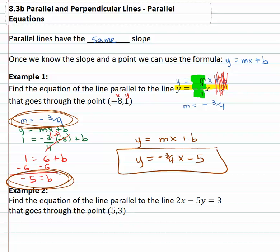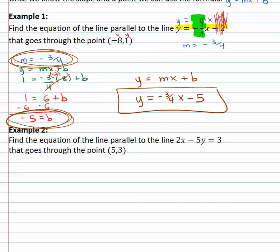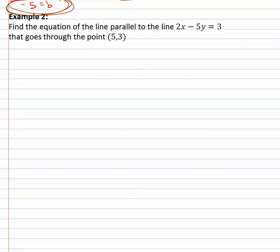Let's try another example where we do essentially the same thing. In this example, we're going to find the equation of a line parallel to two x minus five y equals three that goes through the point five comma three. Well this one's a little different in that we can't really tell what the slope is unless we first put it in slope intercept form.